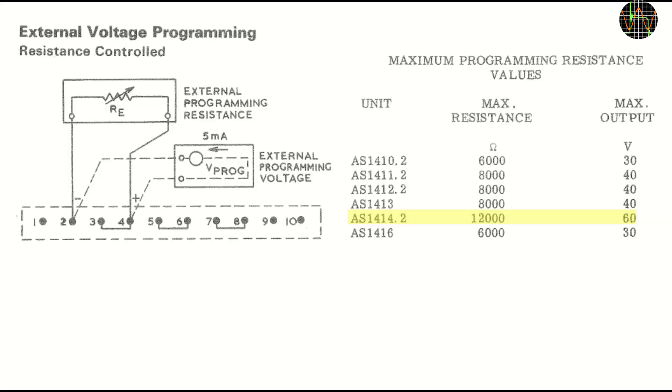Lastly, a quick look at the external programming capabilities. It is called programming, but there isn't anything digital of course. This is the voltage programming, but similar capabilities exist for current. In essence, you can either use an external resistor to control voltage. The higher the resistance, the higher the voltage and for my model, 12K will give you the maximum 60V. It is a linear scale, using 200 Ohms per volt.